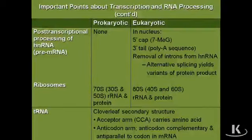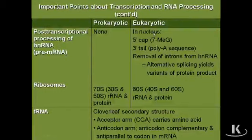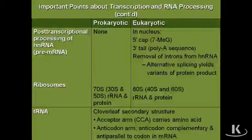Lastly, processing. Processing of the heterogeneous nuclear RNA or the pre-mRNA: there's absolutely no processing that goes on within prokaryotes. In eukaryotes in the nucleus, there's a five prime cap — a seven methyl guanosine cap attached to the five prime end — there's a poly-A tail attached to the three prime end of each message, and then there's removal of the introns by splicing. The exons are then linked together, and sometimes there can be alternative splicing between various cell types.